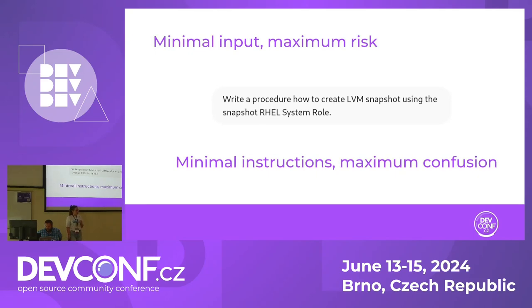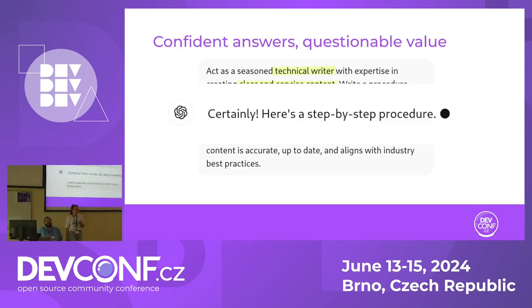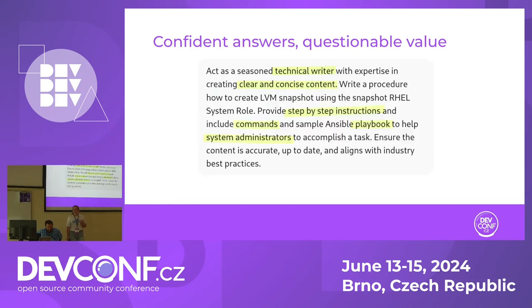But let's not give up — let's try to improve our prompt and give better instructions. We provided better instructions: specifying exactly the type of content, target audience, and what GPT should give us. GPT said "certainly, here is a step-by-step procedure." The content looked very appealing and convincing at first. But when I started reading, I noticed the first step was recommending using a community collection — that's not what we asked for. Additionally, there was an example Ansible playbook, but only the first step of the workflow — just creating the snapshot — was included as a task. The remaining parts, such as verifying the snapshot or mounting the snapshot, were presented as manual steps on the command line.